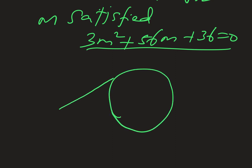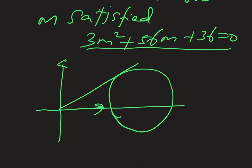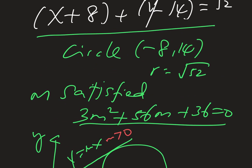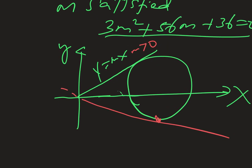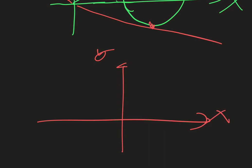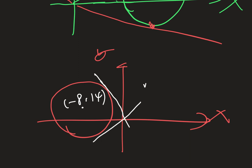You have the circle and a tangent line y = mx. When m is bigger than zero or smaller than zero, the tangent line slopes this way or that way. The circle center is at (-8, 14) — I drew it not quite correctly, it should be positioned on the other side. So you have y = mx as the tangent and the center at (-8, 14).